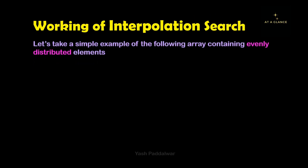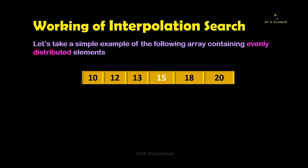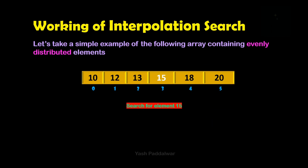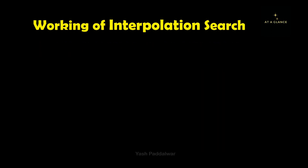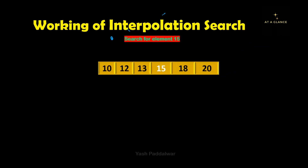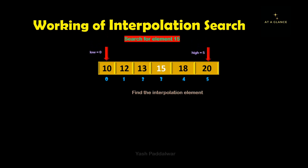With the help of an example, I will explain how the interpolation search algorithm works so you will understand the entire working. Here we have taken an example of a sorted array. Let's find the element 15. As per the algorithm, the first step is to set the low and high values. Clearly, low is the zeroth index and high is the fifth index. The next step is to find the interpolation element's position using the formula.